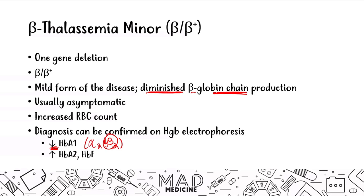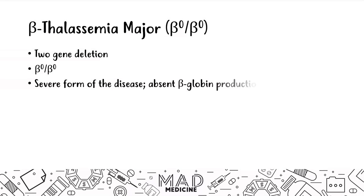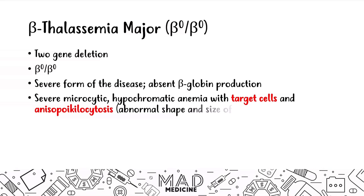The other type is beta thalassemia major. This means you have two gene deletions. Either you can have minor or major, and it's all based off the number of gene deletions. Because there are only two genes in the beta globin chain, you can only have two gene deletions leading to beta thalassemia major. This is going to be the more severe form, and you're going to have absent beta globin production. This leads to severe microcytic hypochromic anemia. You're going to see target cells and anisopoliocytosis.